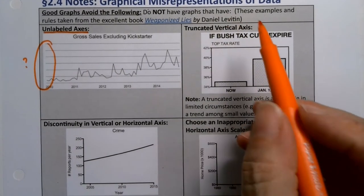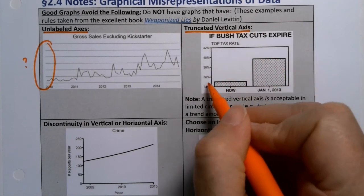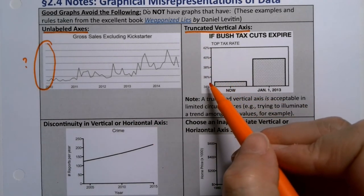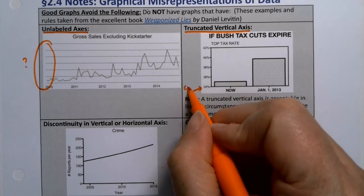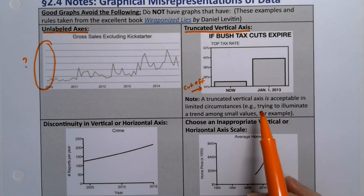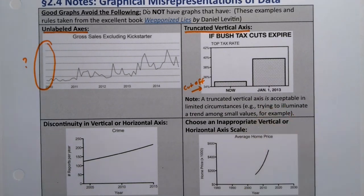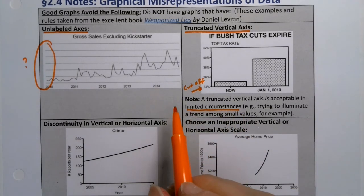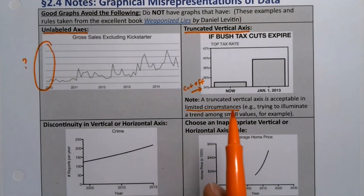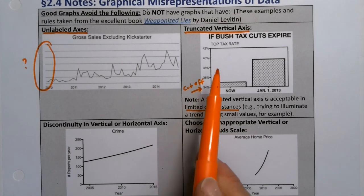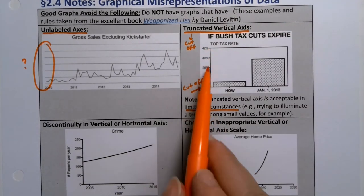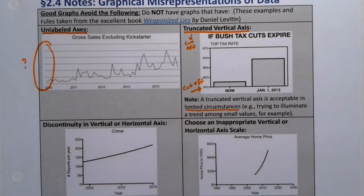This next one is a really good example I found online — a truncated vertical axis. Look at what happens: it goes from 34 to 42, so it's cut off right at the bottom; it doesn't go down to zero. A truncated vertical axis is acceptable if you're trying to show a difference or illuminate a small value, so in limited circumstances you can do this. But in general, you should avoid it unless there's a really good reason — having a political axe to grind may not be that reason.